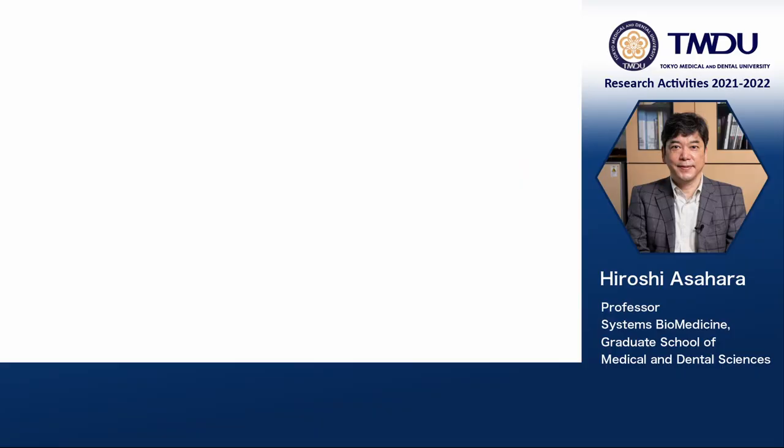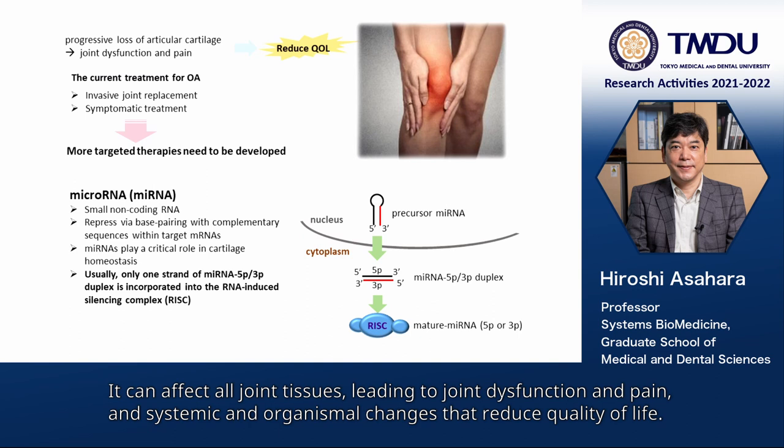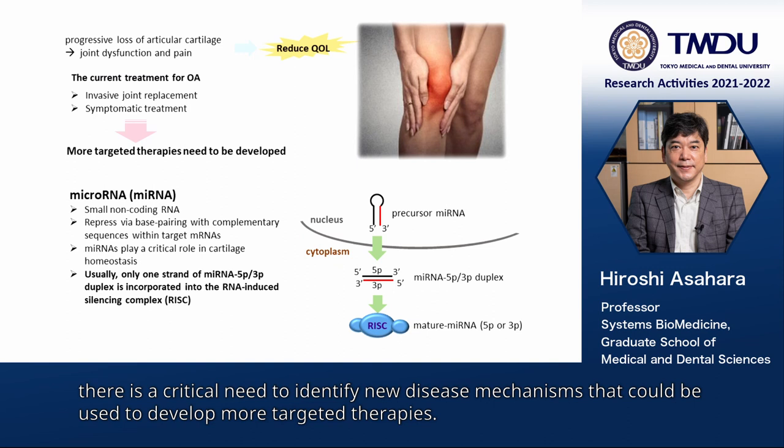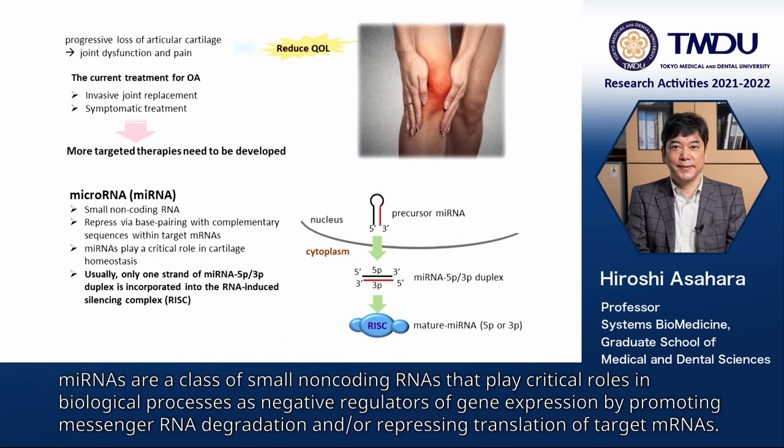Osteoarthritis is characterized by the progressive loss of articular cartilage. It can affect all joint tissues, leading to joint dysfunction and pain, and systematic changes that reduce quality of life. The current treatment for osteoarthritis is generally limited to invasive joint replacement and symptomatic treatment. Therefore, there is a critical need to identify new disease mechanisms that could be used to develop more targeted therapies.